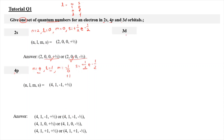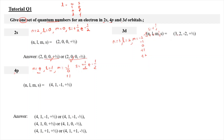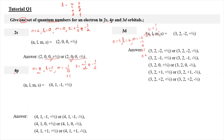Now moving on to 3d. Similarly as before, n is equal to 3, and since we are talking about d orbital, l is equal to 2. When l is equal to 2, m can be negative 2, negative 1, 0, plus 1, and plus 2. And for every case, s can be plus half or minus half, giving you 10 options altogether. I'm going to use n, l, m, s equal to 3, 2, negative 2, and plus half. The other acceptable answers are listed; if your answer is within those options, you are correct.